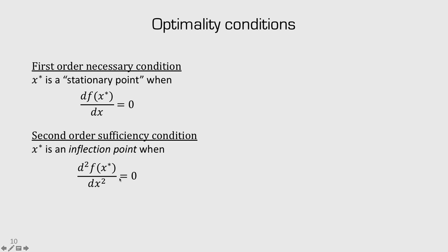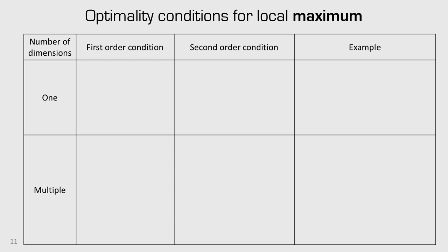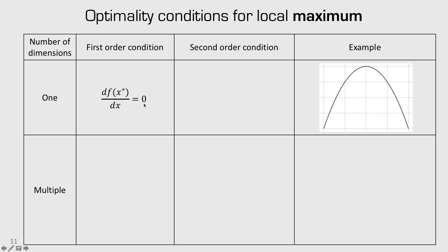There's a third case where the second derivative is equal to zero. In that case, it's known as an inflection point, where the curvature is initially negative and then on the other side the curvature is positive — so you're not really at a min or max. To summarize the optimality conditions for a local maximum: the first order condition is that the derivative equals zero — the slope of the tangent line is zero. The second order condition says the second derivative has to be negative, meaning negative curvature. If those two conditions are met, we're at a local maximum.